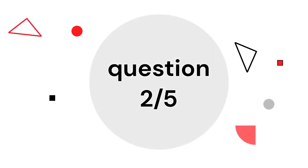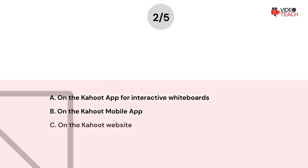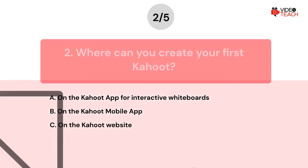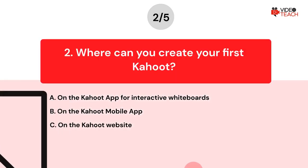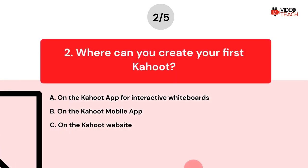Question number two. Where can you create your first Kahoot? Option A: On the Kahoot app for interactive whiteboards. Option B: On the Kahoot mobile app. Option C: On the Kahoot website.